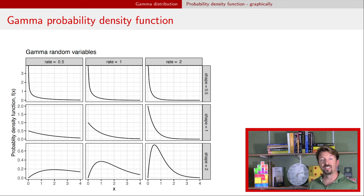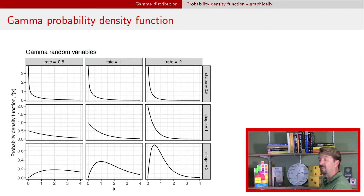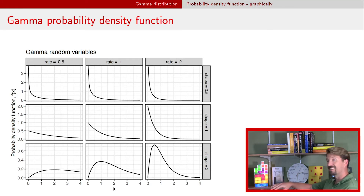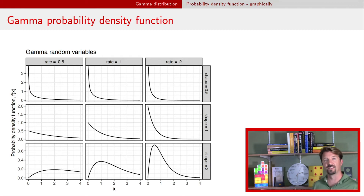In contrast, if the shape parameter is greater than one, you end up with a peak distribution. Along that bottom row, you can see there's a single mode for the distribution that depends on the value of the rate parameter and the shape parameter.